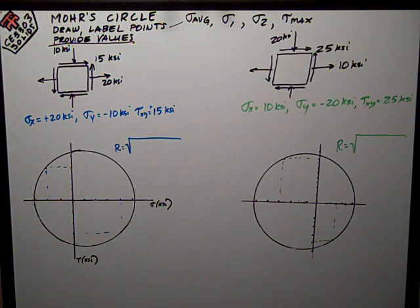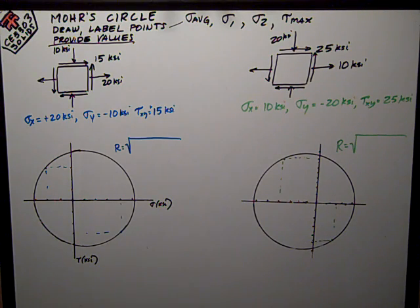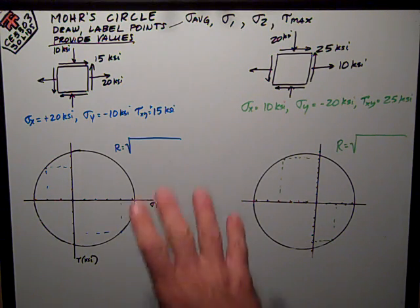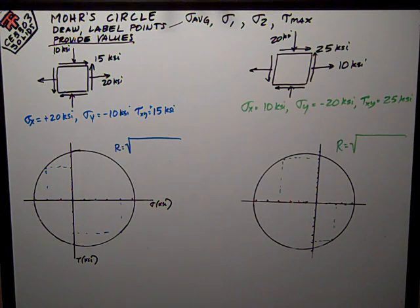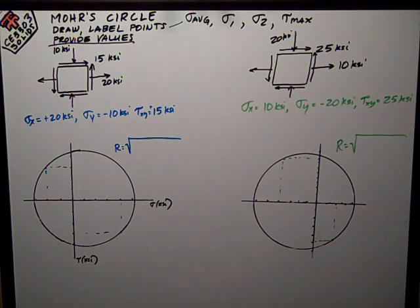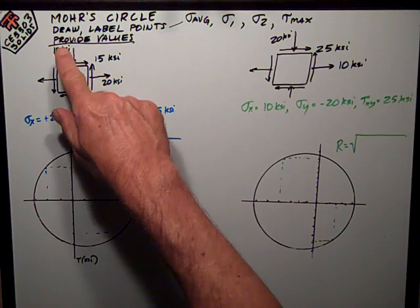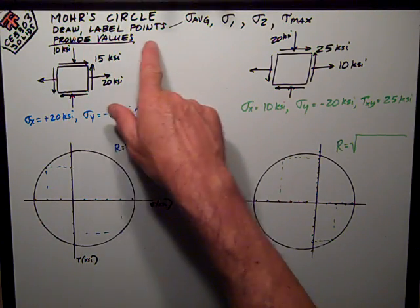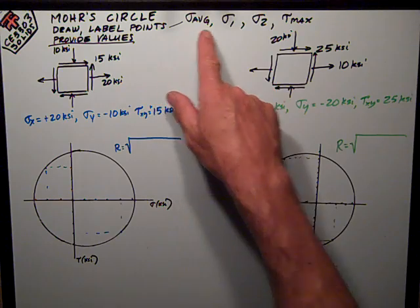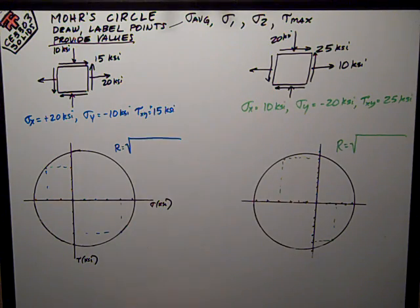This is David Spears, civil engineering instructor at Texas Tech University, talking about CE 3303 Solids. We're reviewing exam number three. The final page was on Mohr's circle, which is a very visual representation of the state of stress on an element, showing all the orientations in one convenient diagram. In this problem, we were asked to draw a Mohr's circle, label some important points on Mohr's circle, and provide the values in blanks.